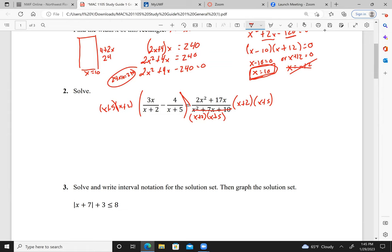x plus 2, x plus 5. So here the x plus 2 cancels out, and I have 3x times x plus 5. Here the x plus 5 cancels out, and I have minus 4 times x plus 2. Here they all cancel out, so I get 2x squared plus 17x.